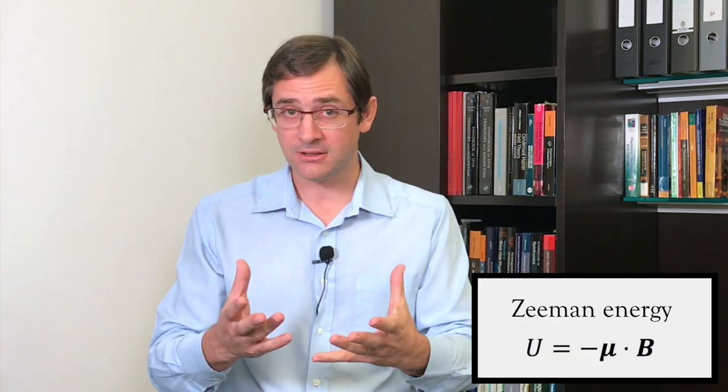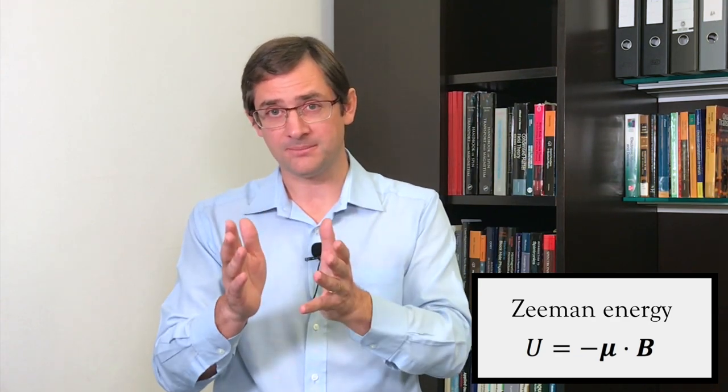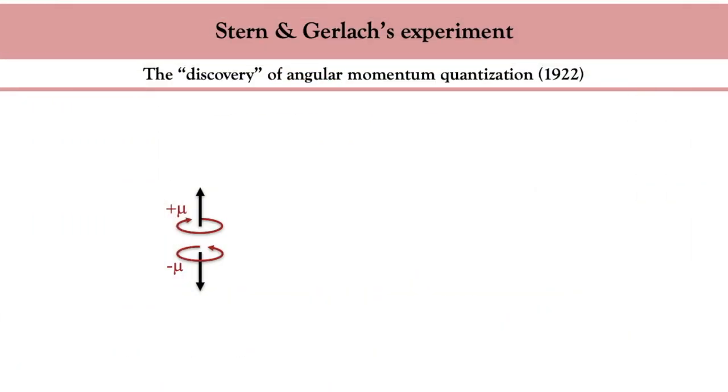The idea of Stern and Gerlach was the following: because the electron possesses a quantized orbital moment as well as a charge, it should possess a quantized magnetic moment. If you submit this electron to a magnetic field, its magnetic moment will try to align with the field. The total energy will be described by what is called the Zeeman energy, which is simply minus μ (the magnetic moment) dotted with the magnetic field B.